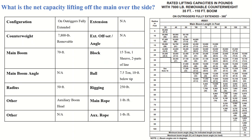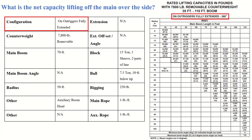Getting into the question: what is the net capacity lifting off the main over the side? The first thing we need to do is pull the right chart. You'll have a 360 chart, an over-the-rear chart, and two extension charts. This one is off the main boom — 35 to 110 feet of main boom — and we're lifting off the side, which is why we're using the 360 chart. I like to go over all the configuration boxes to make sure they all line up: outriggers fully extended, removable counterweight 7,800 pounds — all this lines up.